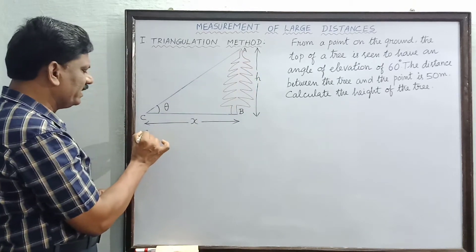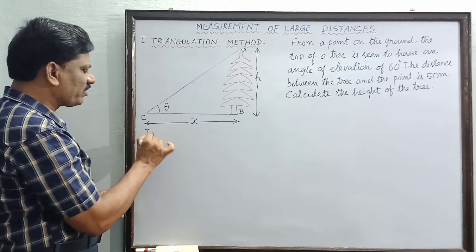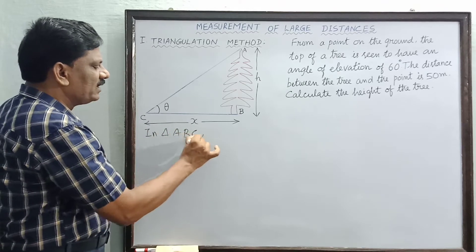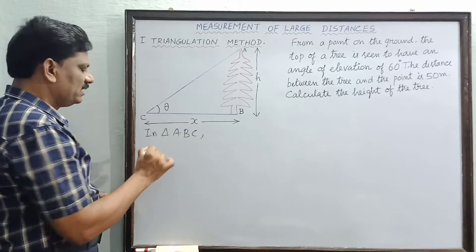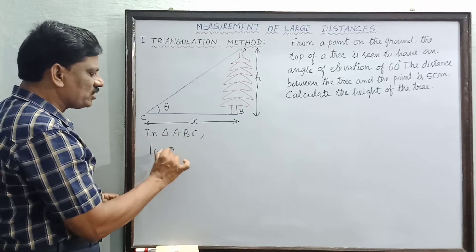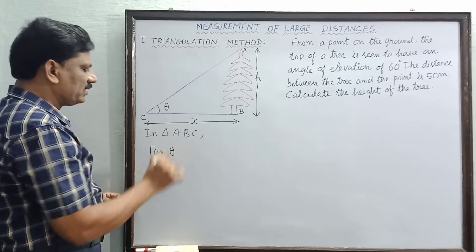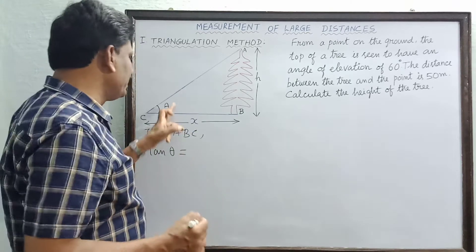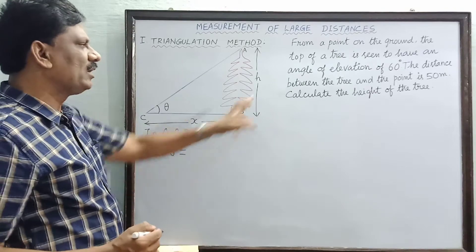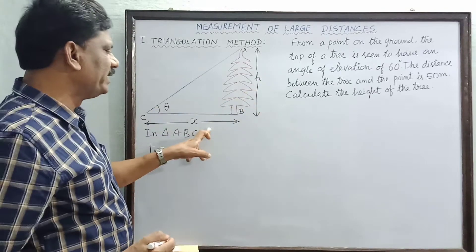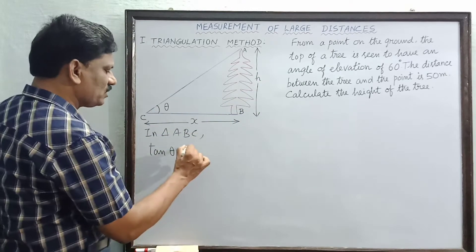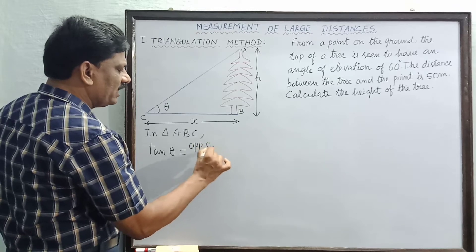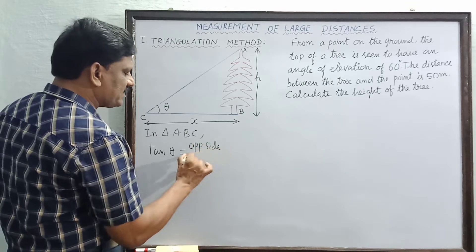Since we are finding large distances, we will measure x. From triangle ABC, tan theta is equal to the opposite side divided by the adjacent side. So tan theta equals AB divided by BC.